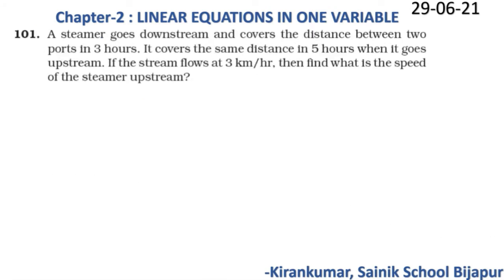Question 101 is a very important question — this type appears in both class 9 and class 10. A steamer goes downstream and covers the distance between two ports in 3 hours. It covers the same distance in 5 hours when going upstream. If the stream flows at 3 km/h, find the speed of the steamer upstream.